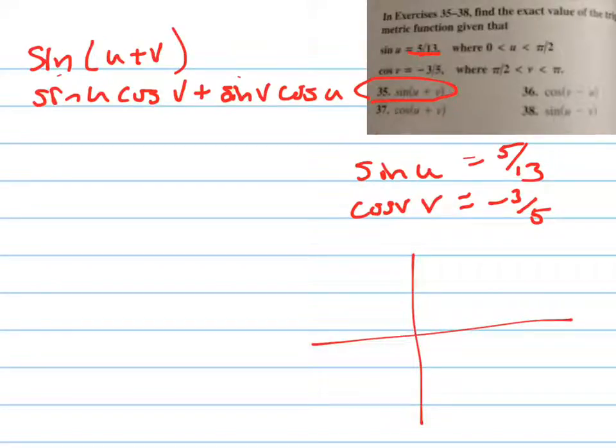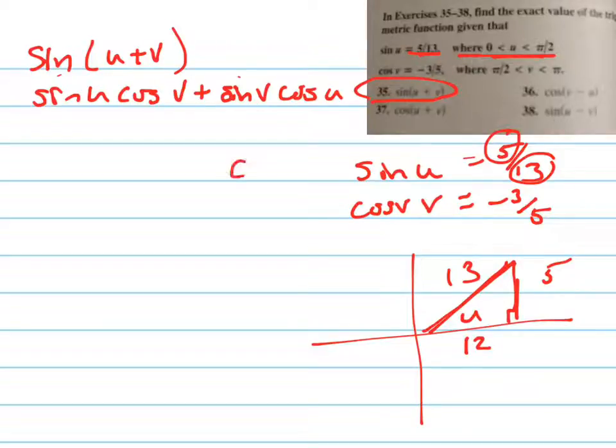And then remember, I'm going to have to draw a triangle. And so the angle u is going to be in the first quadrant, because it tells us there. So that's u. So the opposite is 5, the hypotenuse is 13. And so this is a 5, 12, 13. So now I can say the cosine of u, because the cosine of this is going to be adjacent now over the hypotenuse. So it's going to be positive 12 over 13.